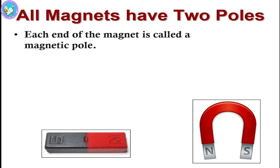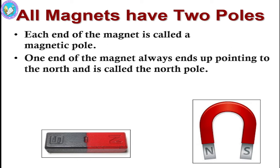To discuss in detail the first property, which has the two poles: if you see the diagram you can see the bar with poles in red and black, where the first one is the north pole and the second one is the south pole. Each end of the magnet is called a magnetic pole. One end of the magnet will always end up pointing north, which is called the north pole — indicated by the red point.